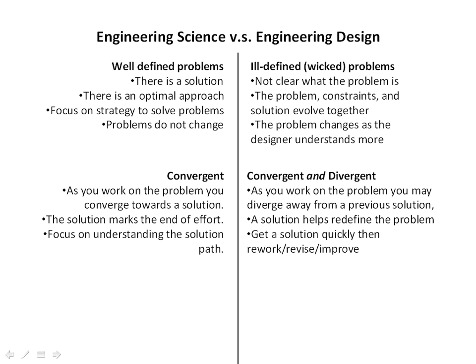Engineering science problems also tend to be convergent. As you work on the problem, you tend to converge toward a solution. When you get a solution, you're done — it marks the end of the effort. You're really focusing on understanding the solution path: how did you get from point A to point B? The next time you encounter a problem like this, you simply plug and chug and can solve it.